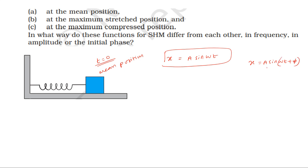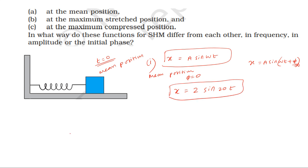If at time t equal to 0 the mass is at the mean position, the displacement is 0 and the initial phase is 0. So the displacement equation is x equal to A sin(ωt), where sin(ω × 0) equals 0. This is the first displacement equation.